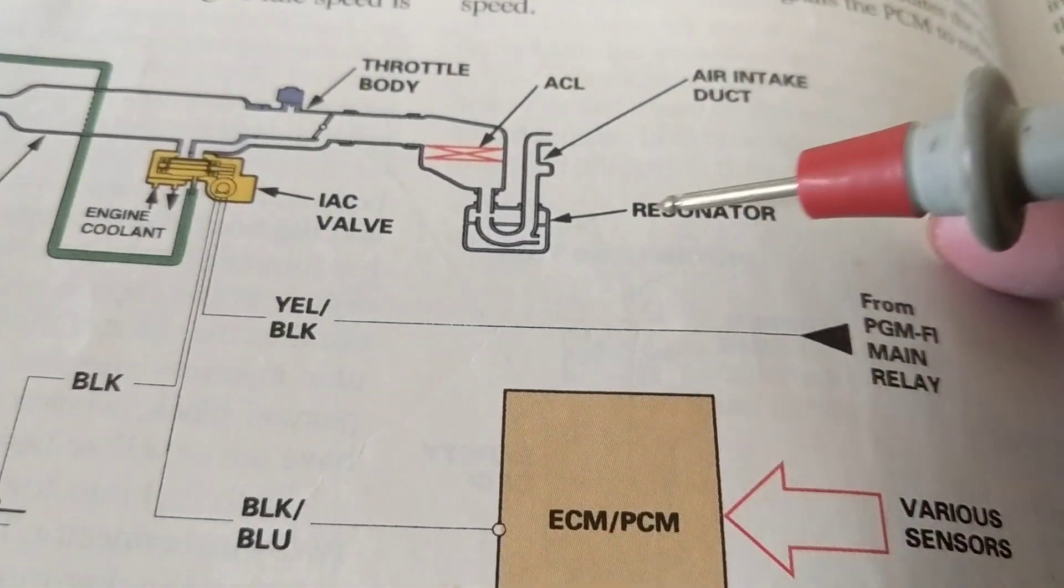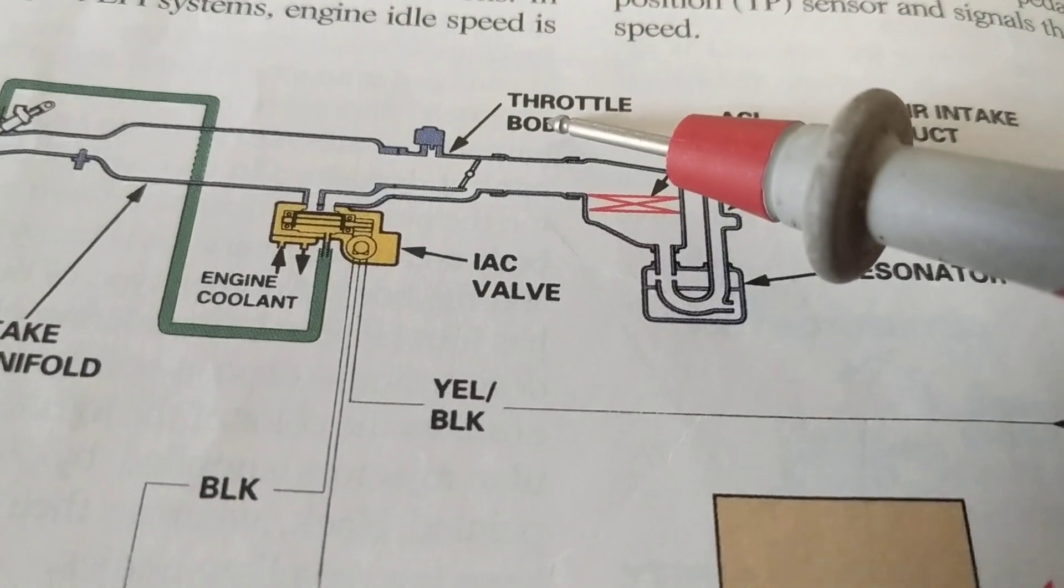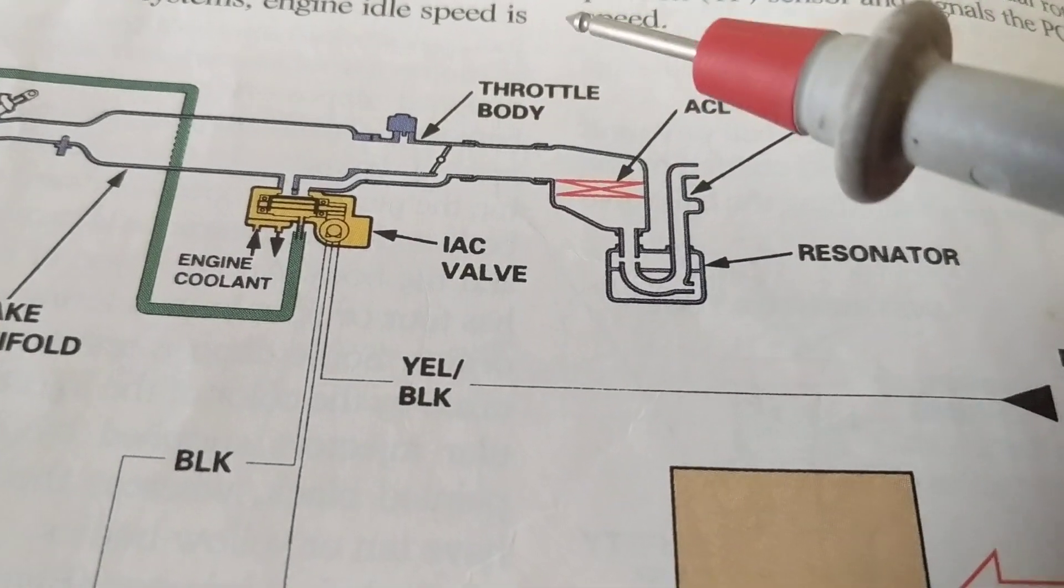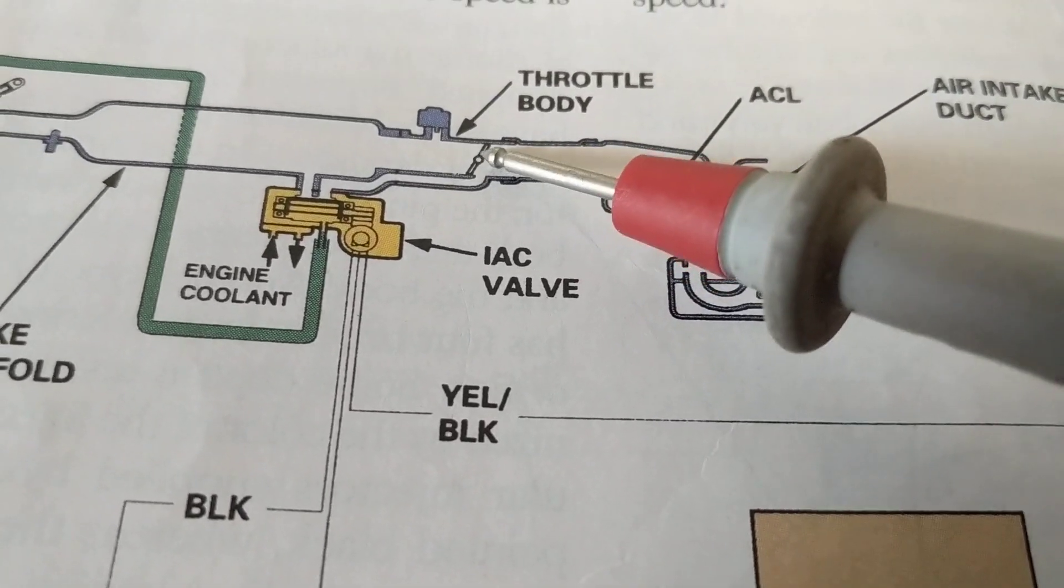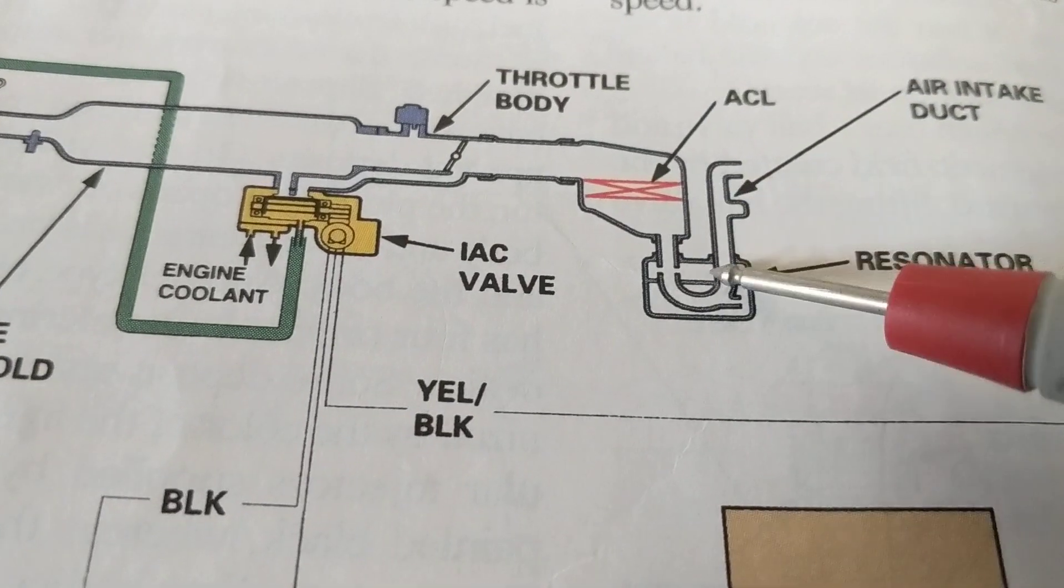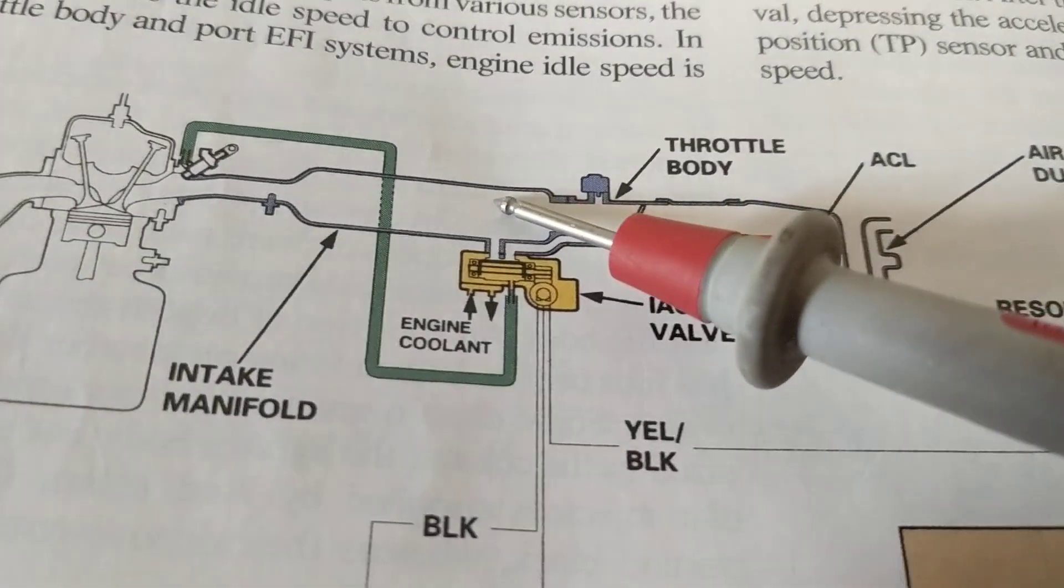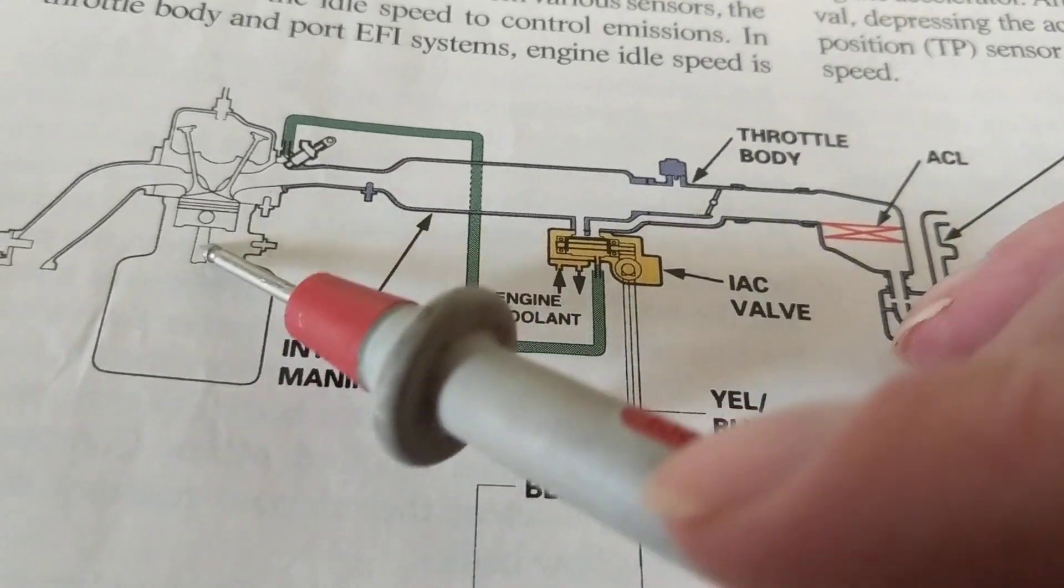Now air comes in. When you have a throttle body, you're stepping on the gas, what you're doing is opening this throttle plate. You see this plate? Opening and closing it. As you're doing that, you're letting more air being drawn into the cylinders.